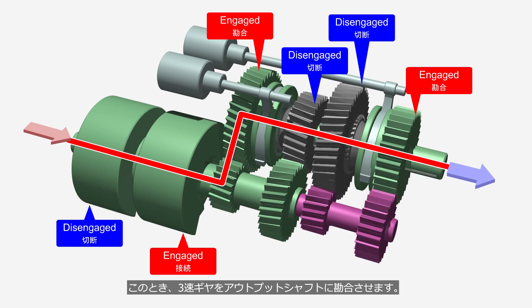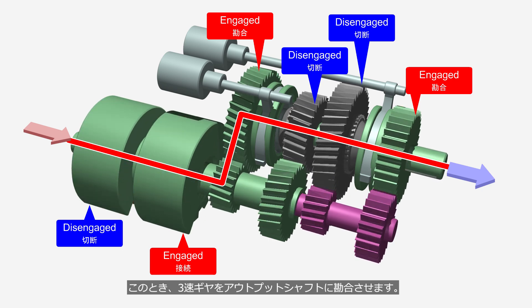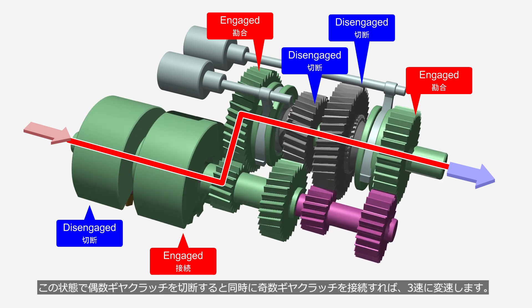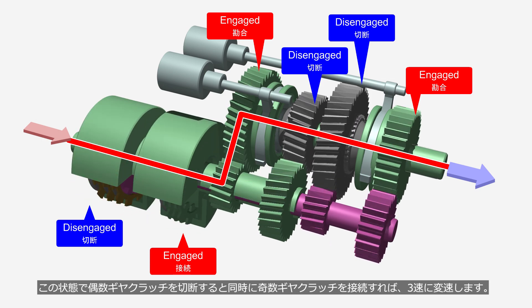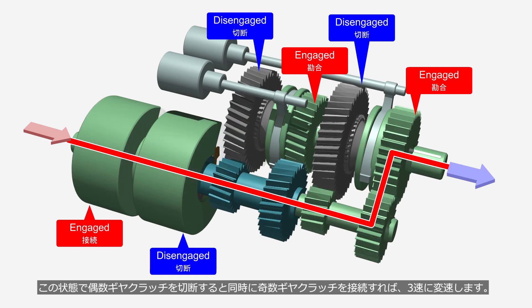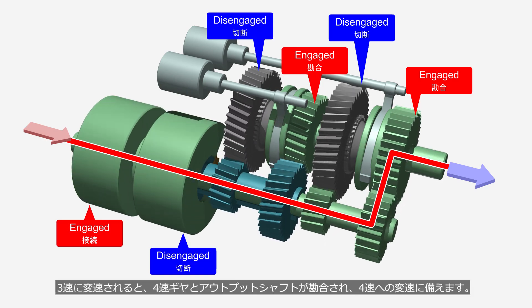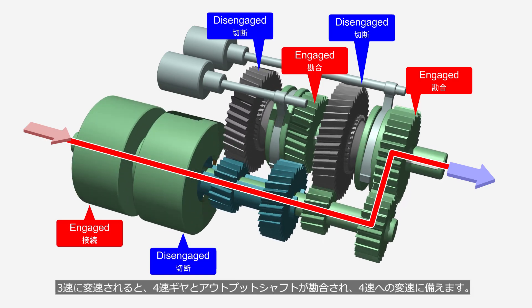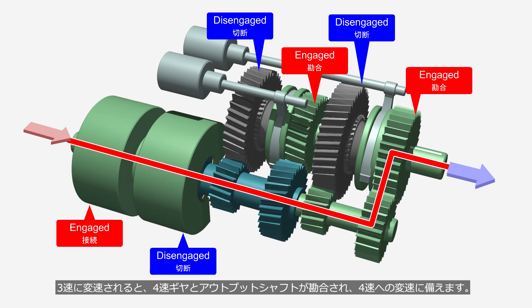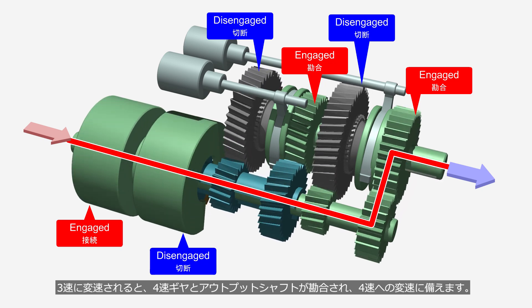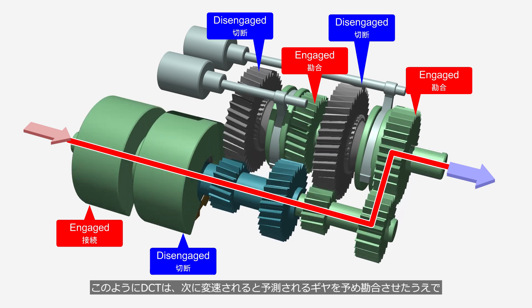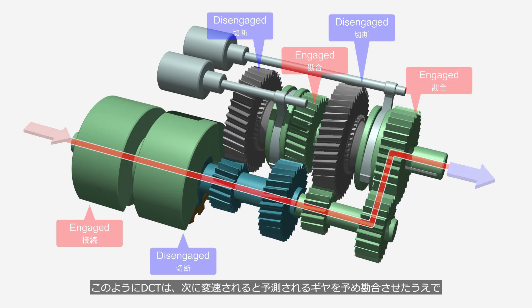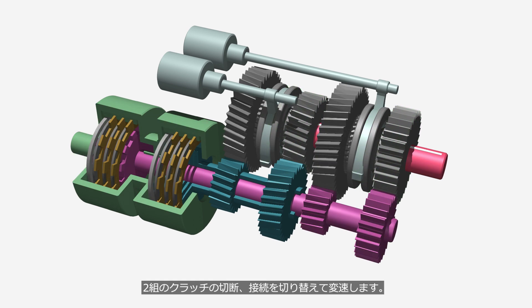At this time, the third gear is engaged with the output shaft. In this state, disengaging the even gear clutch while simultaneously engaging the odd gear clutch will shift it to third gear. Once shifted to third gear, the fourth gear is engaged with the output shaft, preparing for a shift to fourth gear. In this way, a DCT shifts by pre-engaging the gear that is anticipated to shift next, and then switching the disengage and engage of the two sets of clutches.